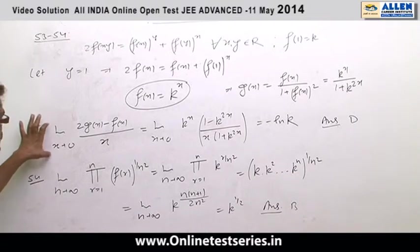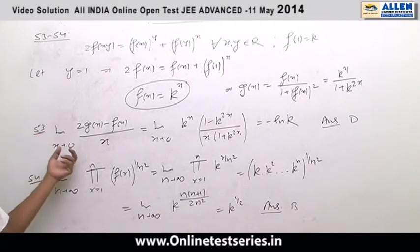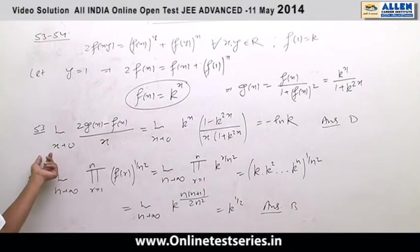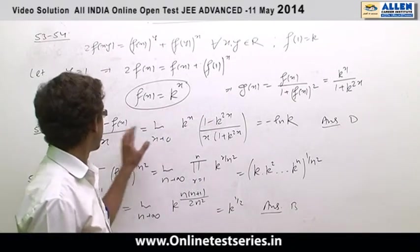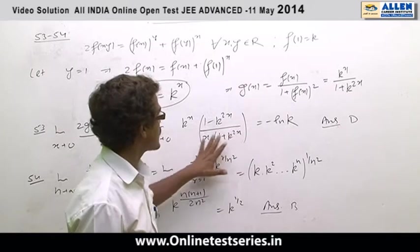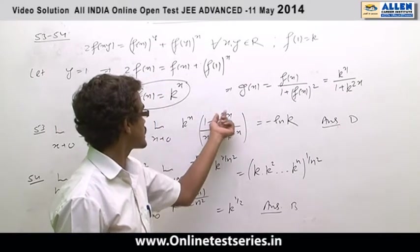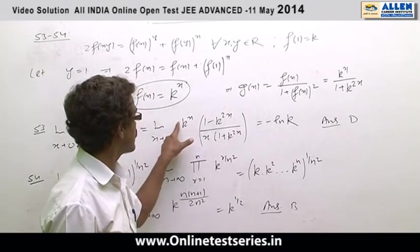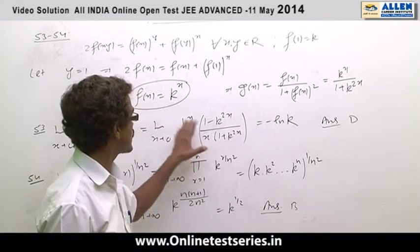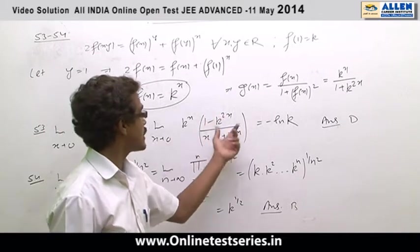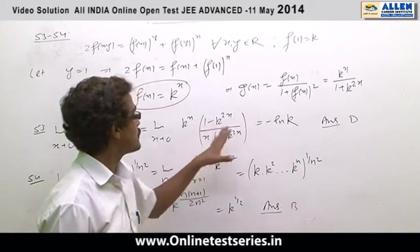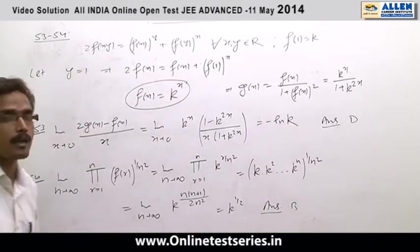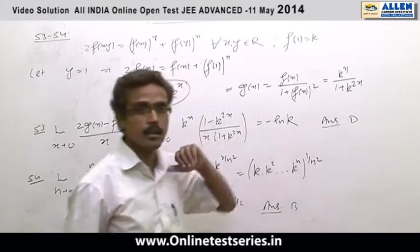For question number 53, we have to find the limit of 2g(x) minus f(x) over x as x approaches 0. Replace g(x) and f(x), this will give us k^x times 1 minus k^(2x) over x times 1 plus k^(2x). Replace the value of x in these expressions will give 1 by 2, and the remaining limit gives minus 2 ln k. So final result will be minus ln k, which is option D.